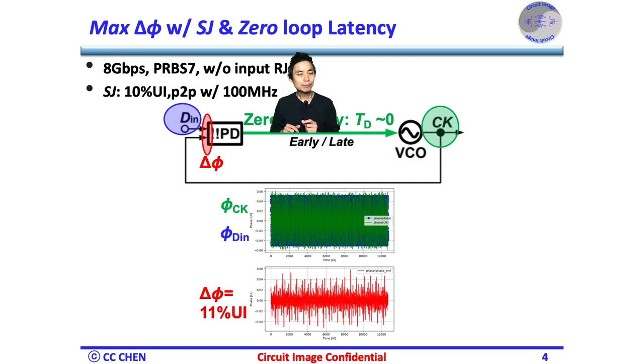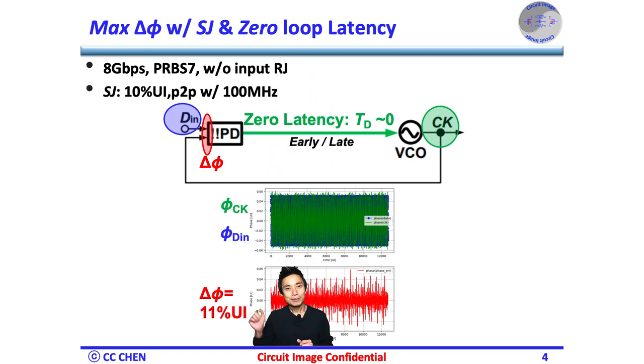but modulated with a 10% UI in amplitude and 100 MHz in frequency. In this case, the maximum phase error over 12,000 bits would be 11% UI, which is slightly larger than the input 10% UI SJ, and not too bad.